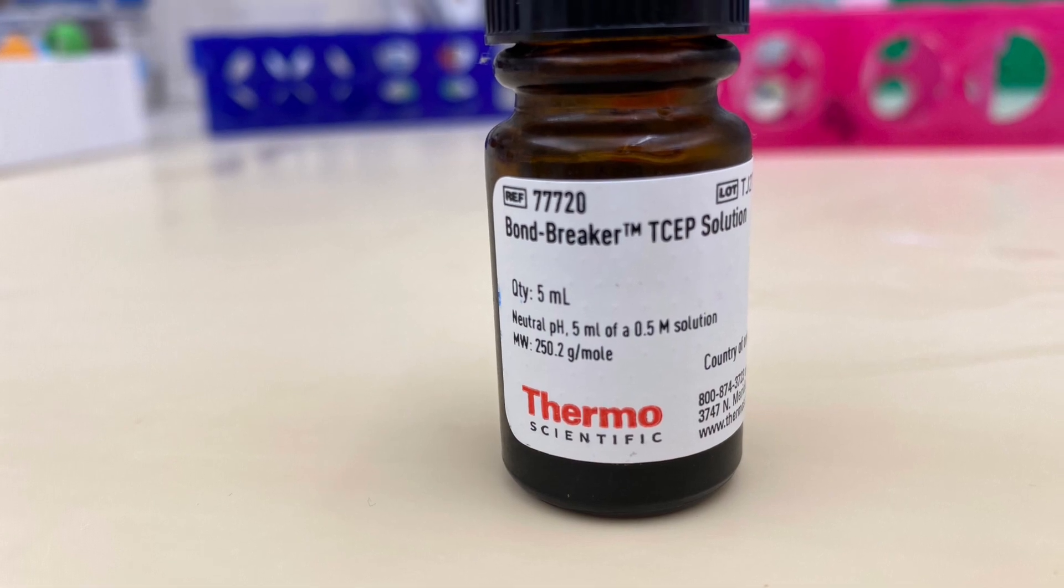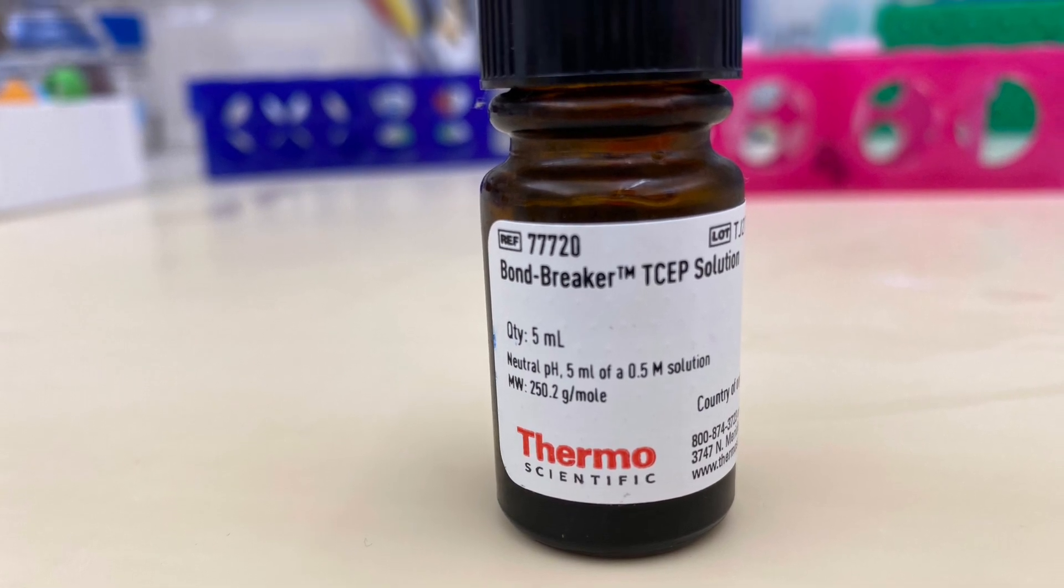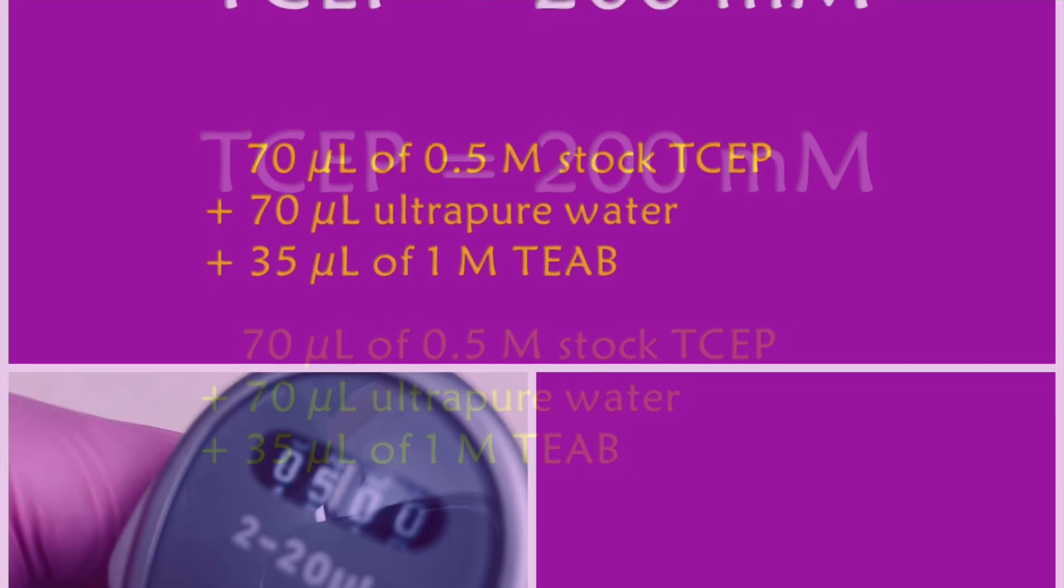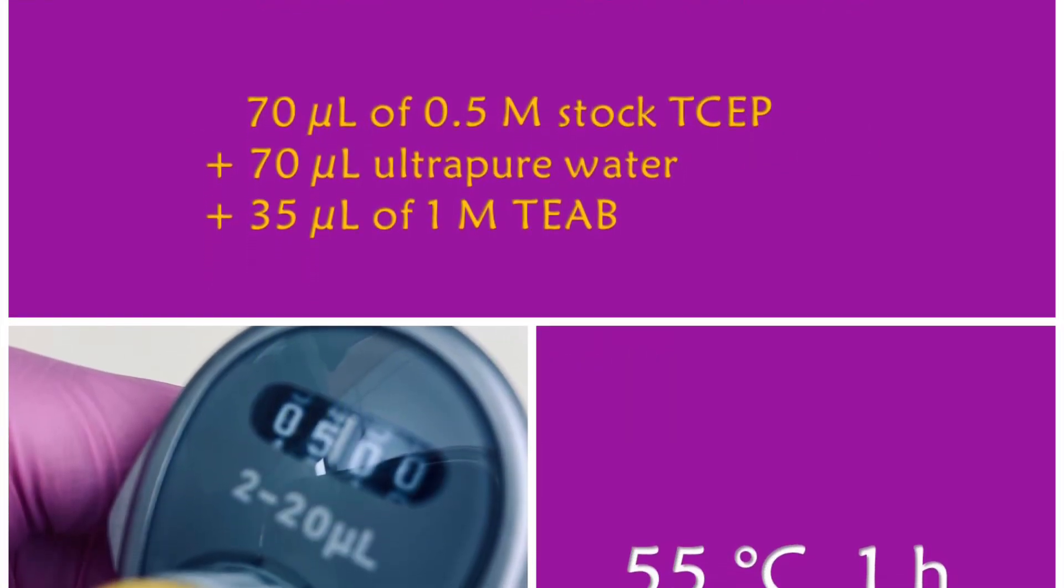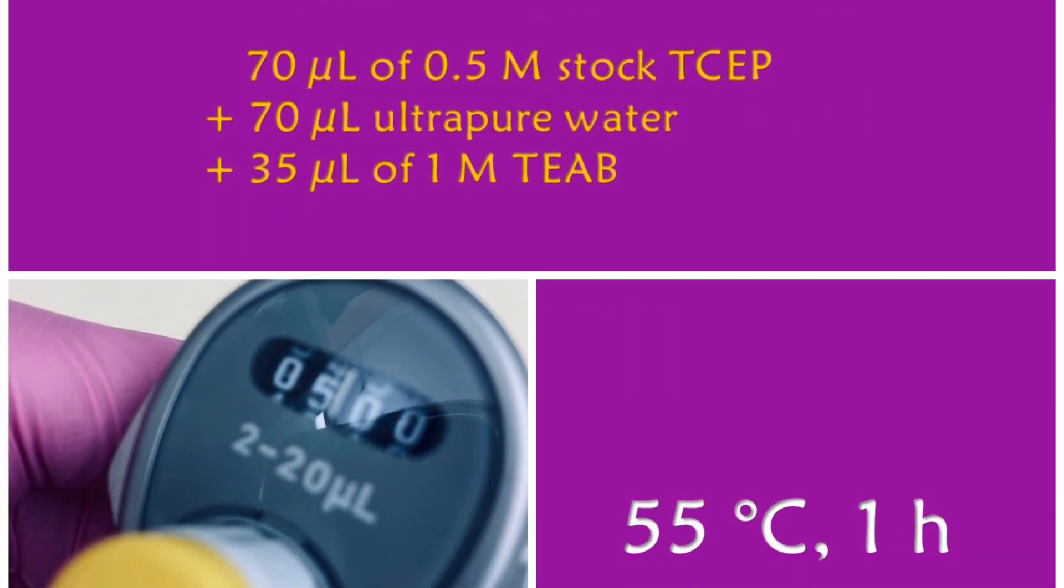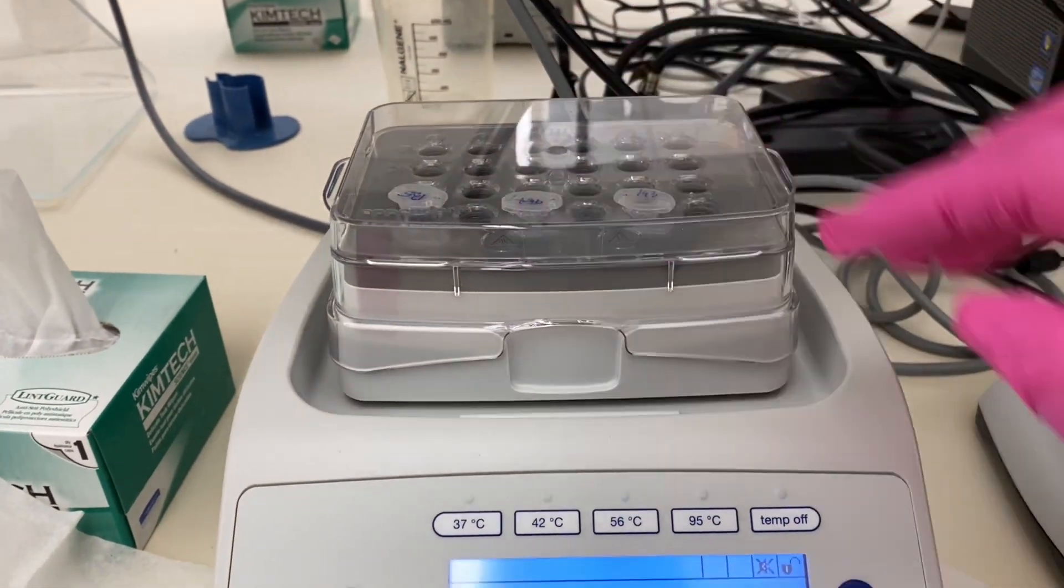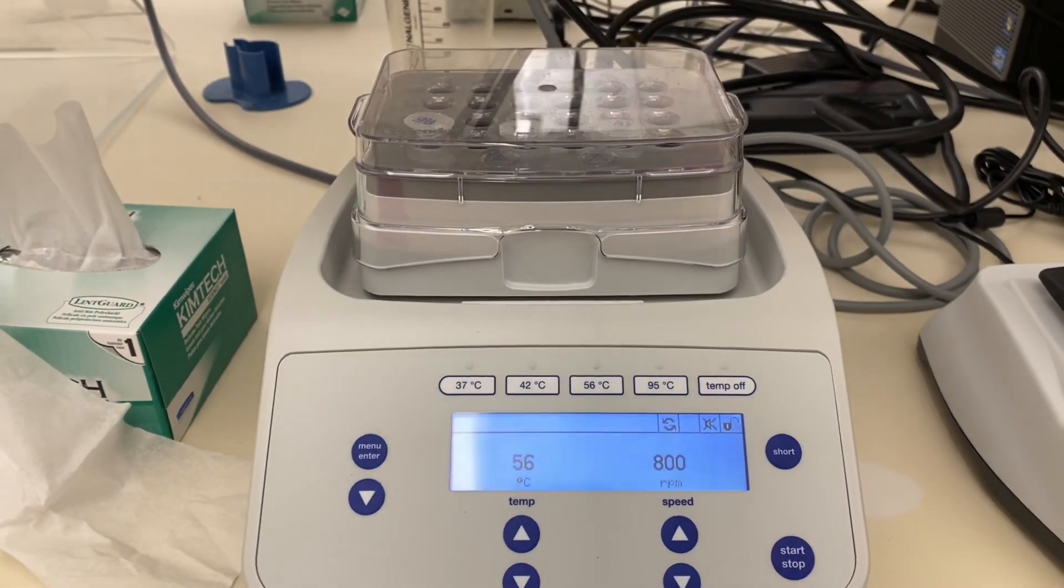For the reduction, I'm using TCEP solution. I'm going to need a 200 millimolar solution, so I have to make it from my stock. This is how I'm going to do this. After that, I will be adding 5 microliters of my TCEP to my samples, and I'm going to shake for one hour at 55 or 56 degrees Celsius on a thermomixer.